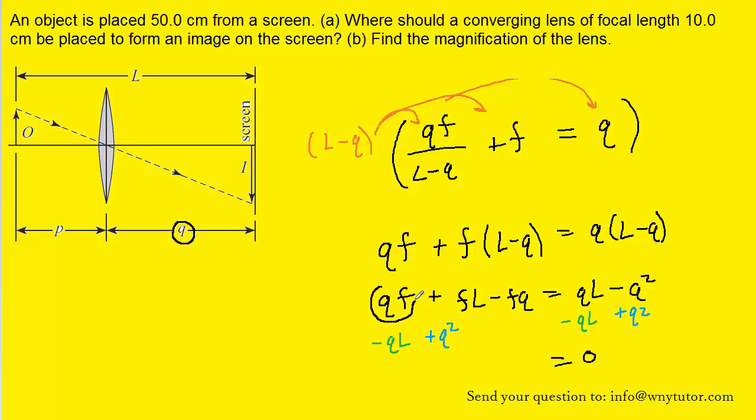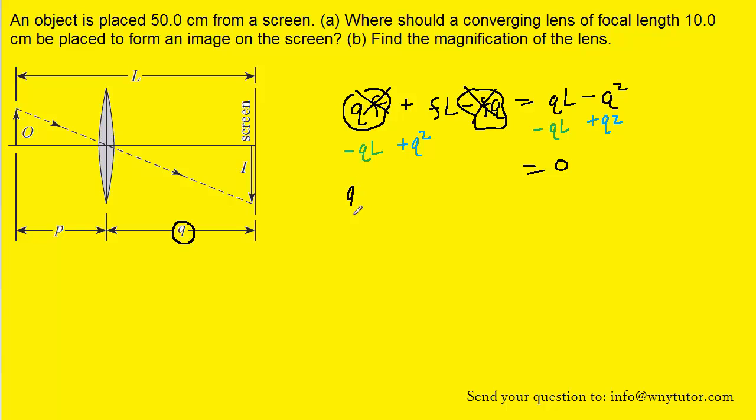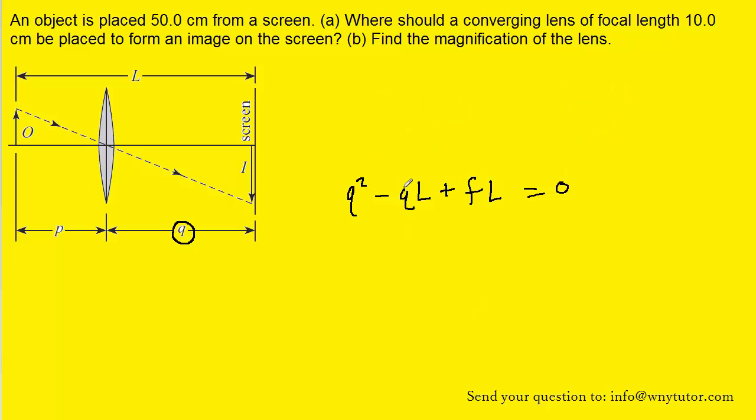You have the QF right here minus FQ. Now of course FQ is the same thing as QF. So QF minus QF. Those will actually cancel out. And we will be left with Q squared minus QL and then plus this term FL. And since our variable is Q we're going to just slightly rewrite it. We'll make it LQ. That way the variable comes after the constant. And then we can switch this around and call this LF.